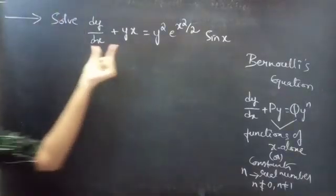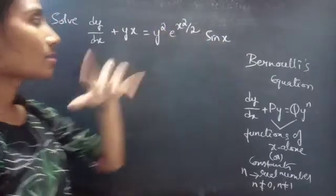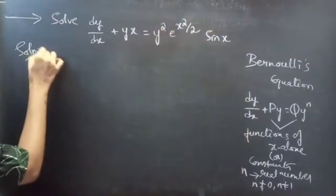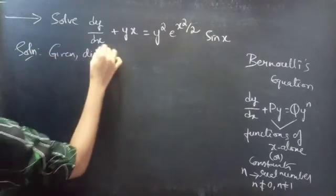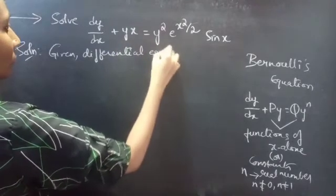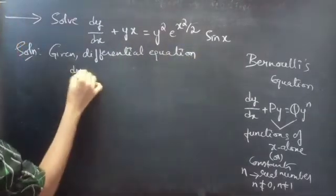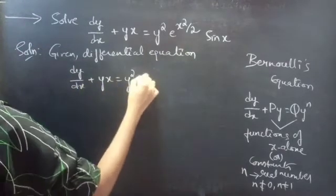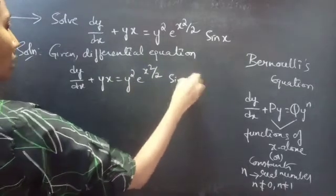Problem: Solve dy/dx plus y·x equals y² times e^(x²/2) times sin x.